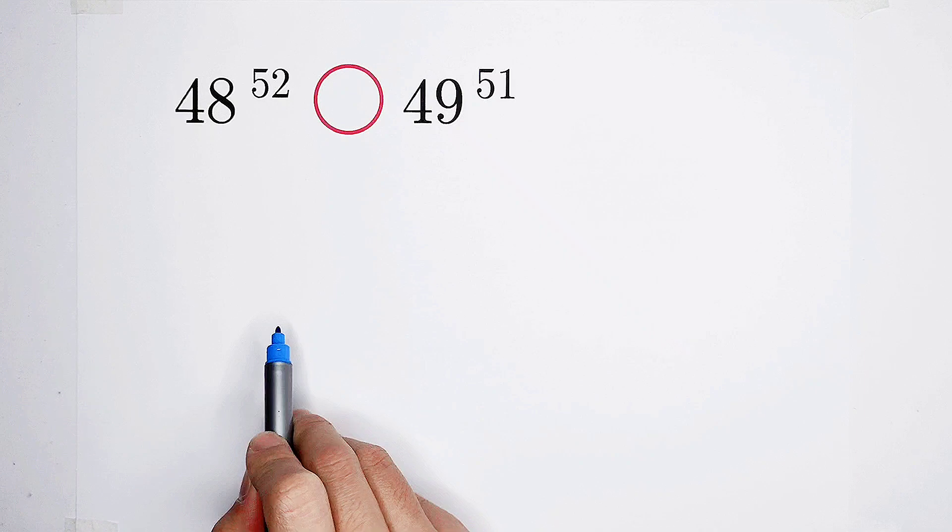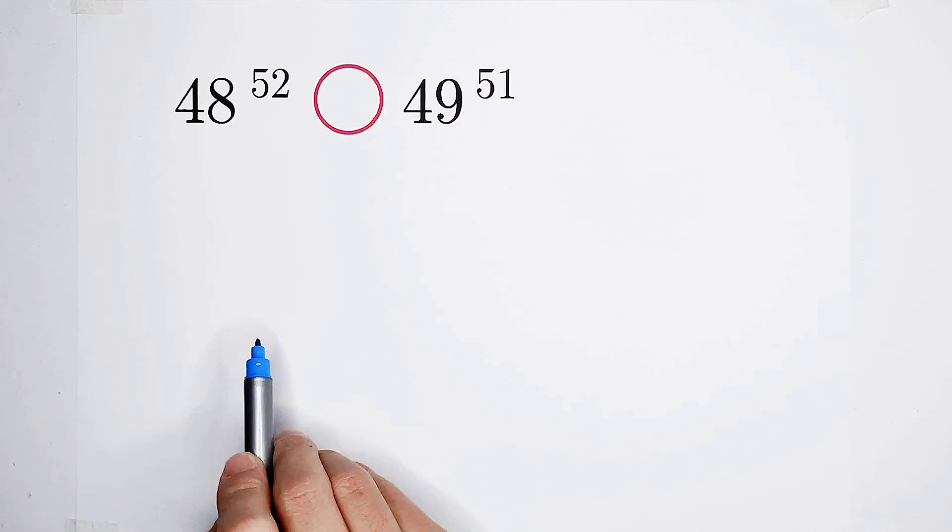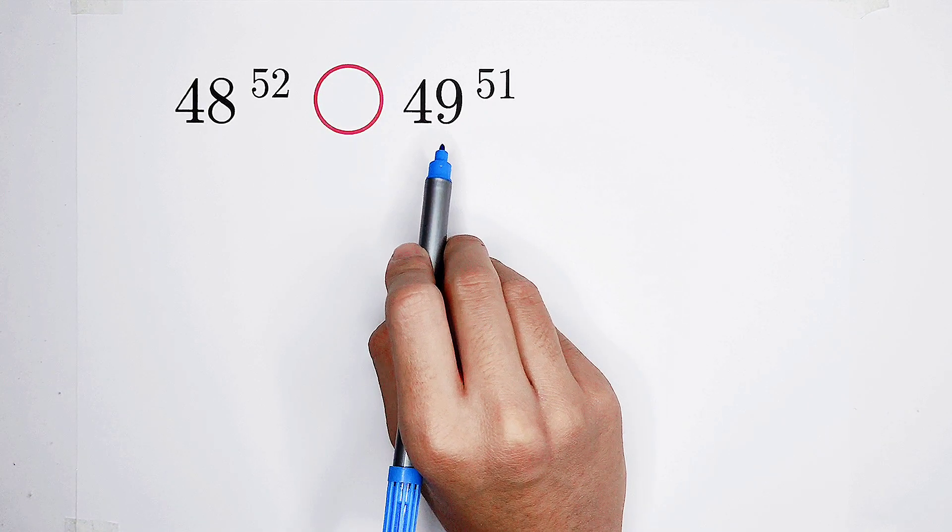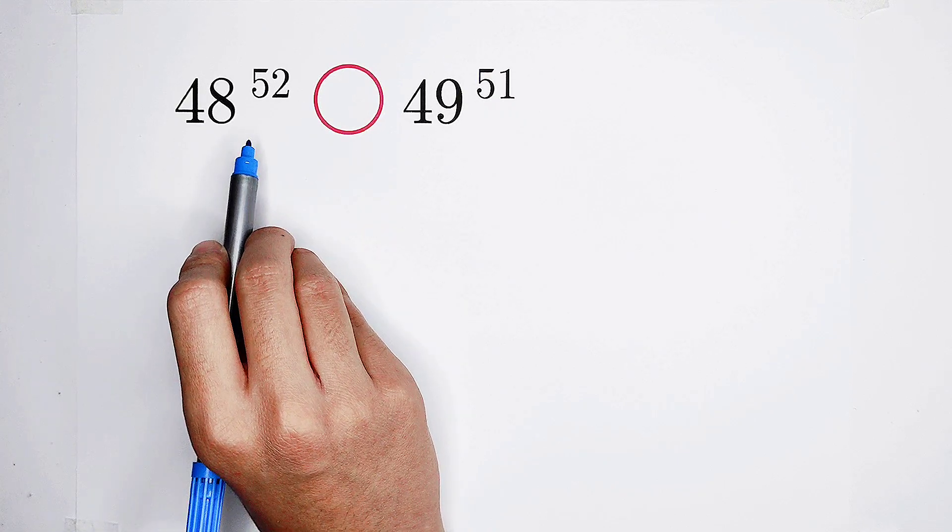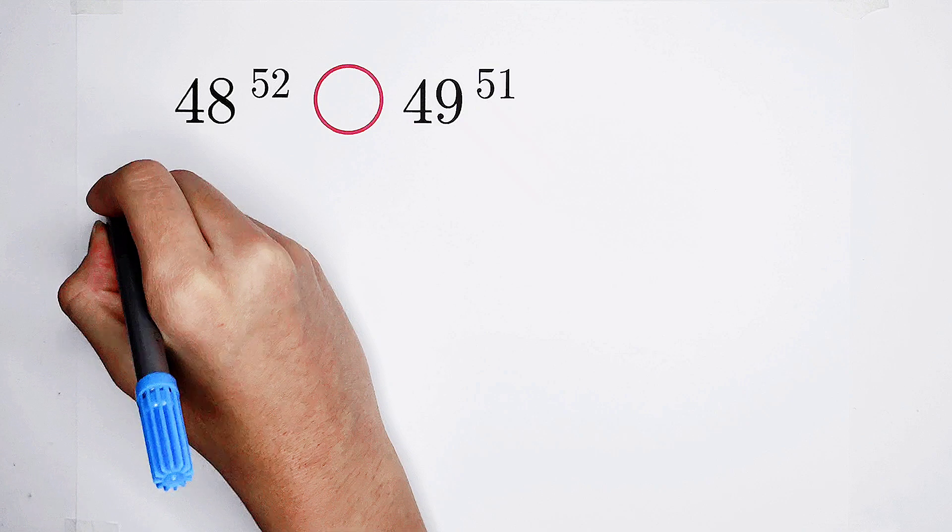Okay, common method. One word, only one word: division. We can divide 49 to the power 51 by 48 to the power 52. Okay, successful.